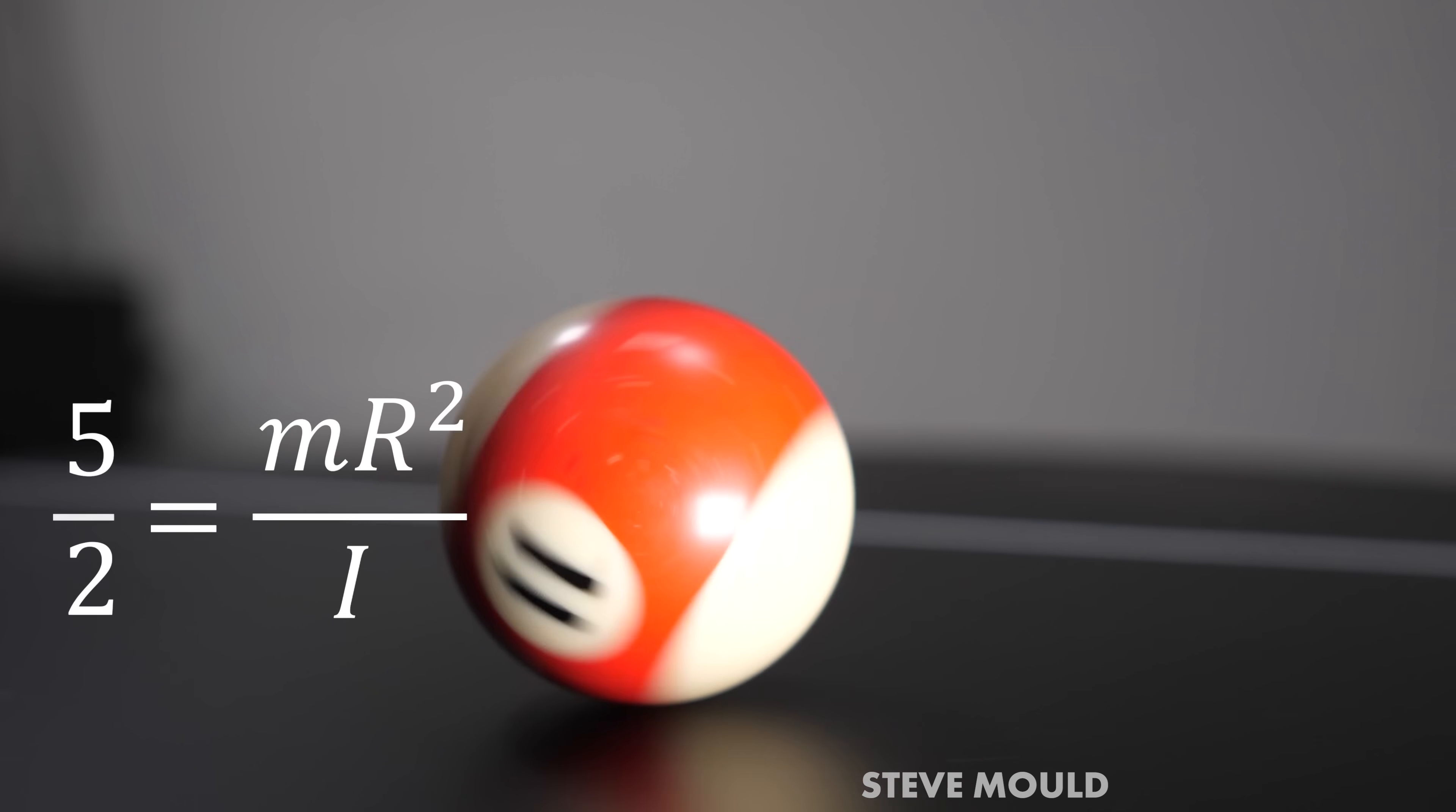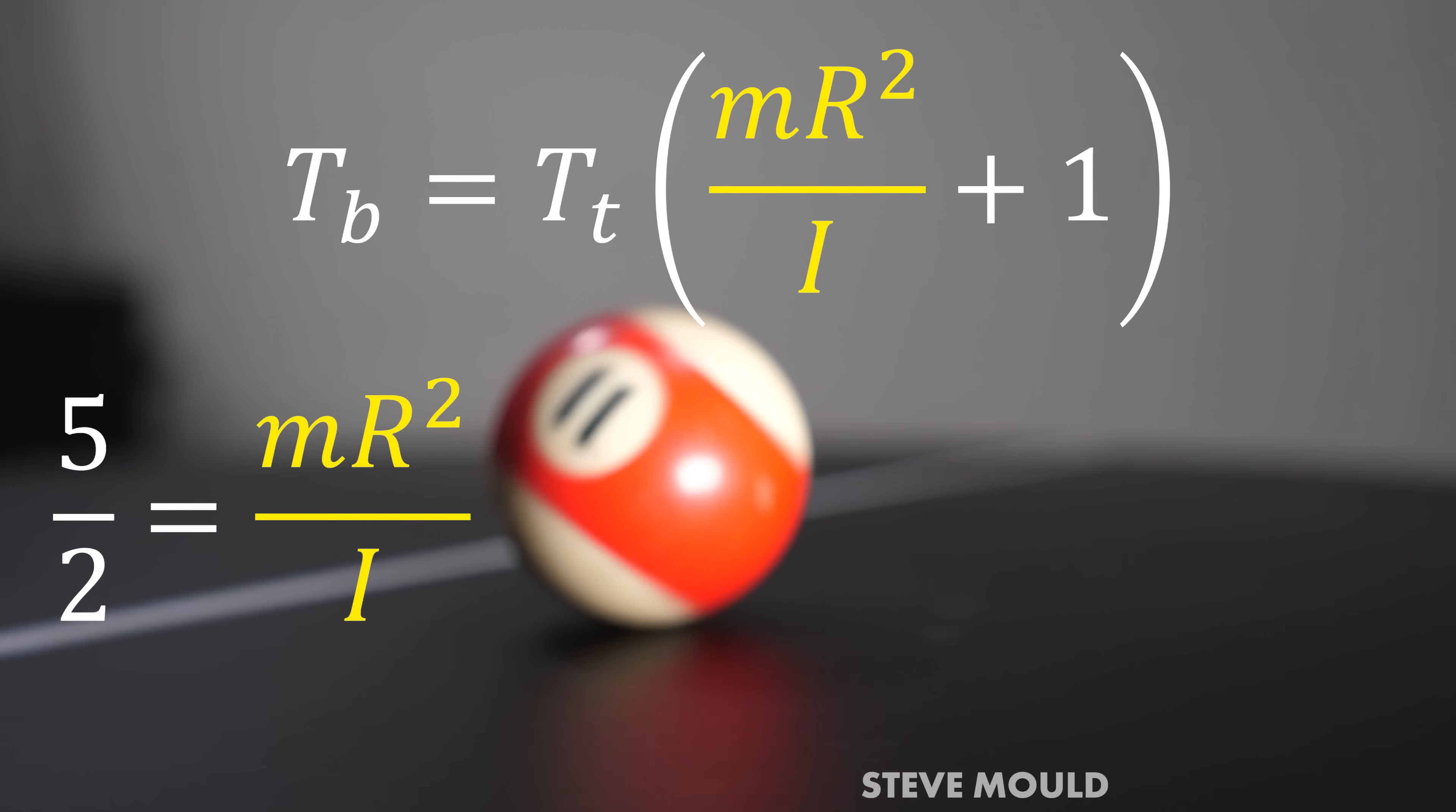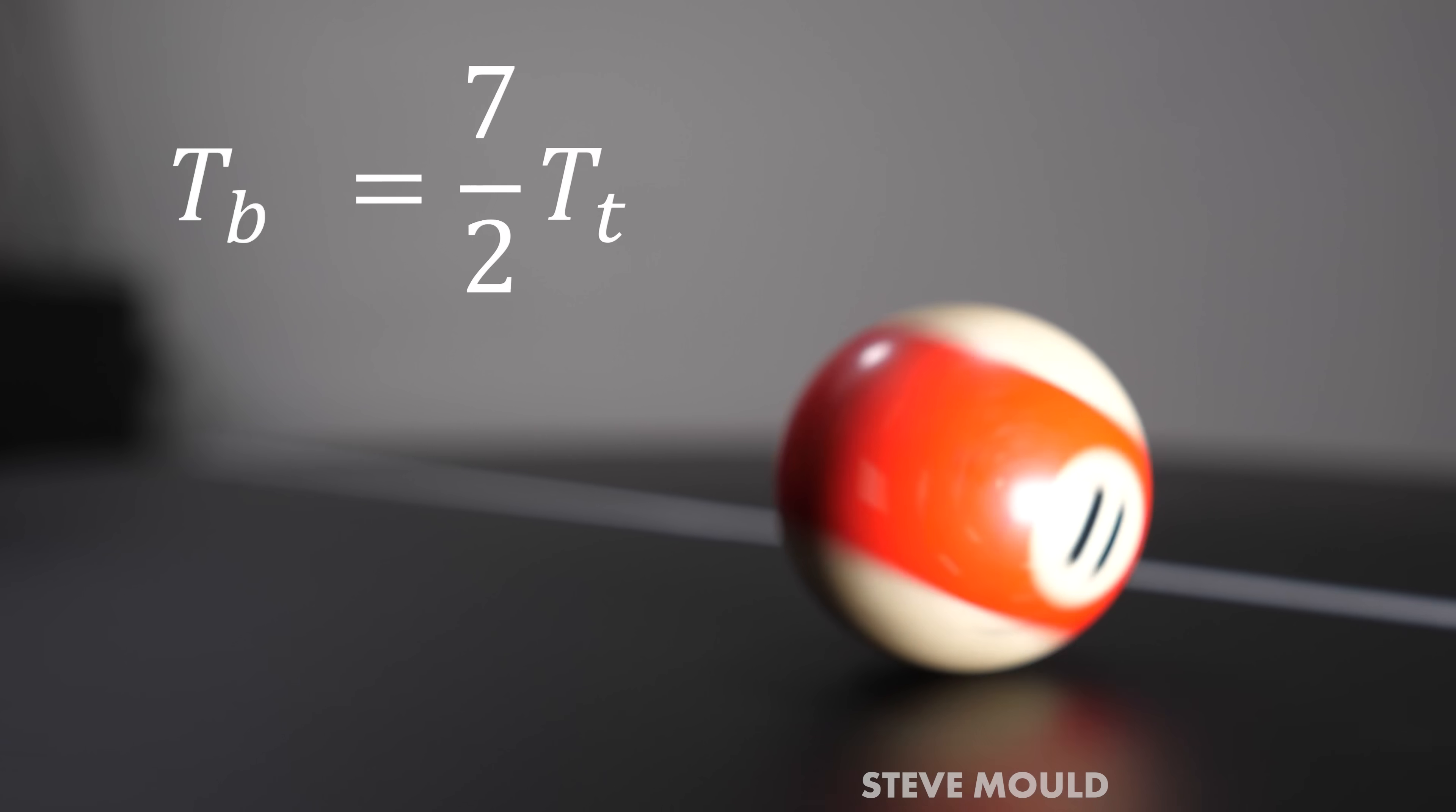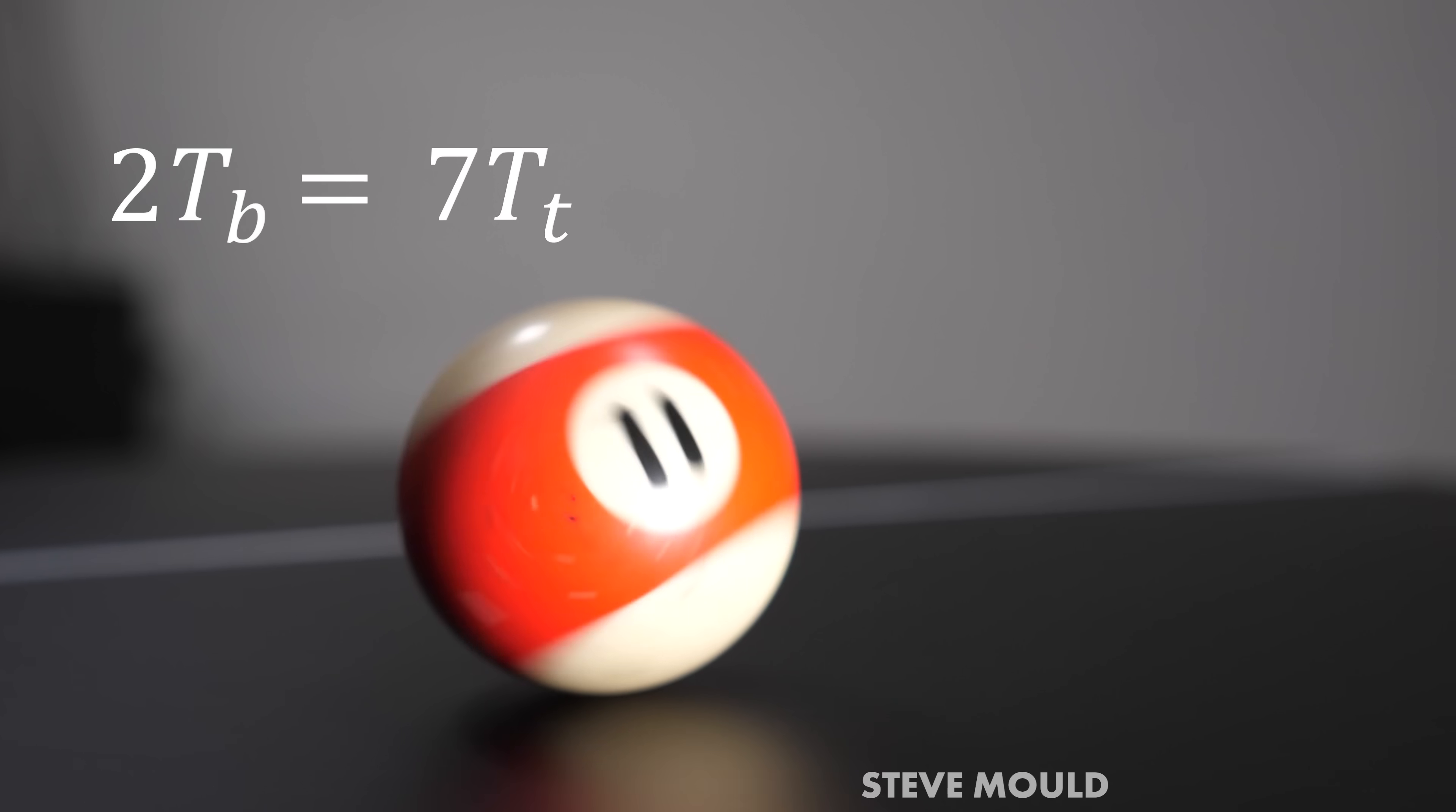The details don't matter, but it comes out as the moment of inertia is equal to two fifths of the mass of the ball multiplied by the radius of the ball squared. Rearranging that, we get that the mass of the ball multiplied by the radius squared divided by the moment of inertia is equal to five divided by two. But look, we have the exact same expression in our original equation, so we can substitute five over two into that equation. Five over two plus one is seven over two. So we have that the orbital period of the ball is equal to seven over two multiplied by the orbital period of the turntable. In other words, for every seven turns of the turntable, you get two orbits of the ball.